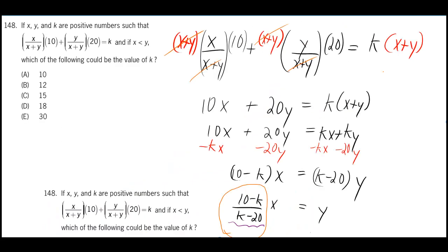Just to get rid of the fraction, we can multiply everything here by x plus y. And then we get some cancellations, and we get 10x plus 20y is equal to k times x plus y. But since we're trying to solve it for y, we're going to want to distribute that k in there, so that way we can eventually combine the ky and the 20y.